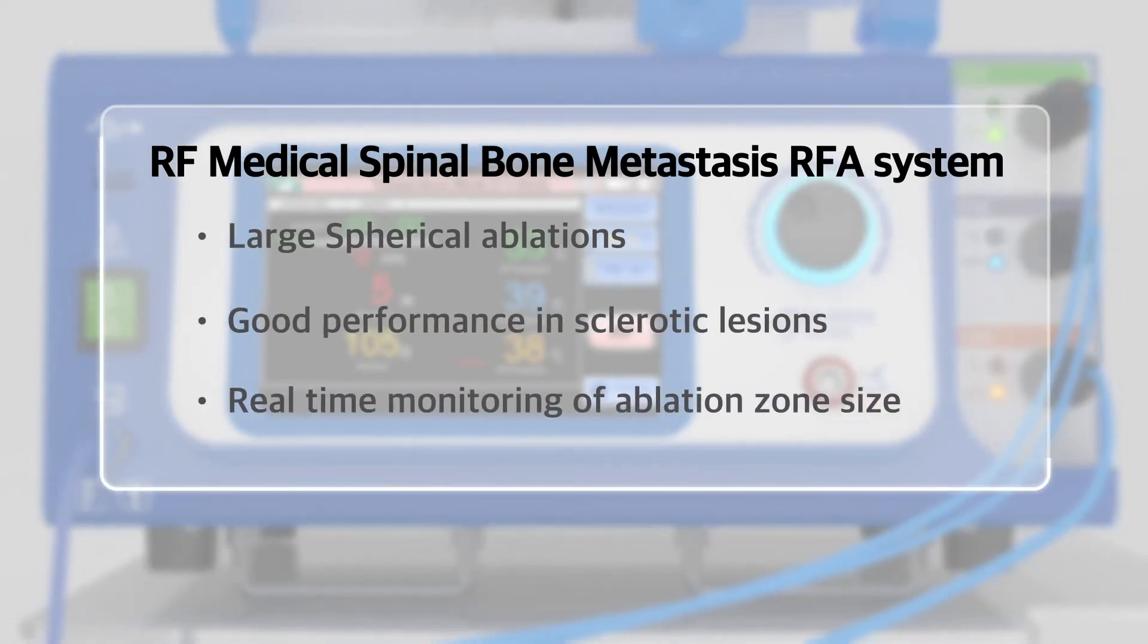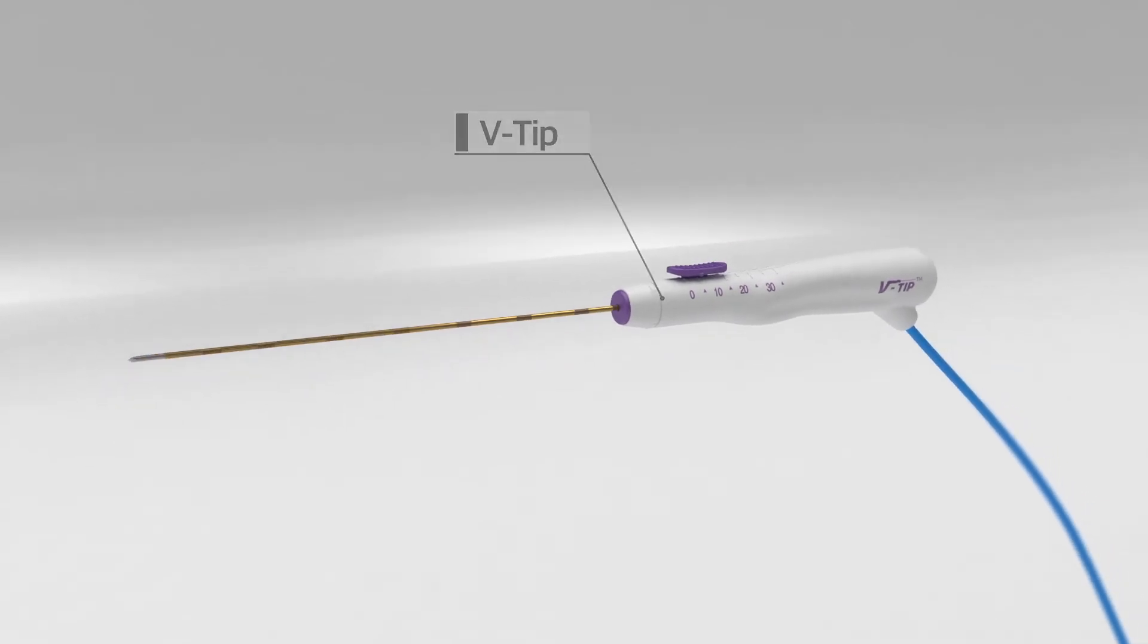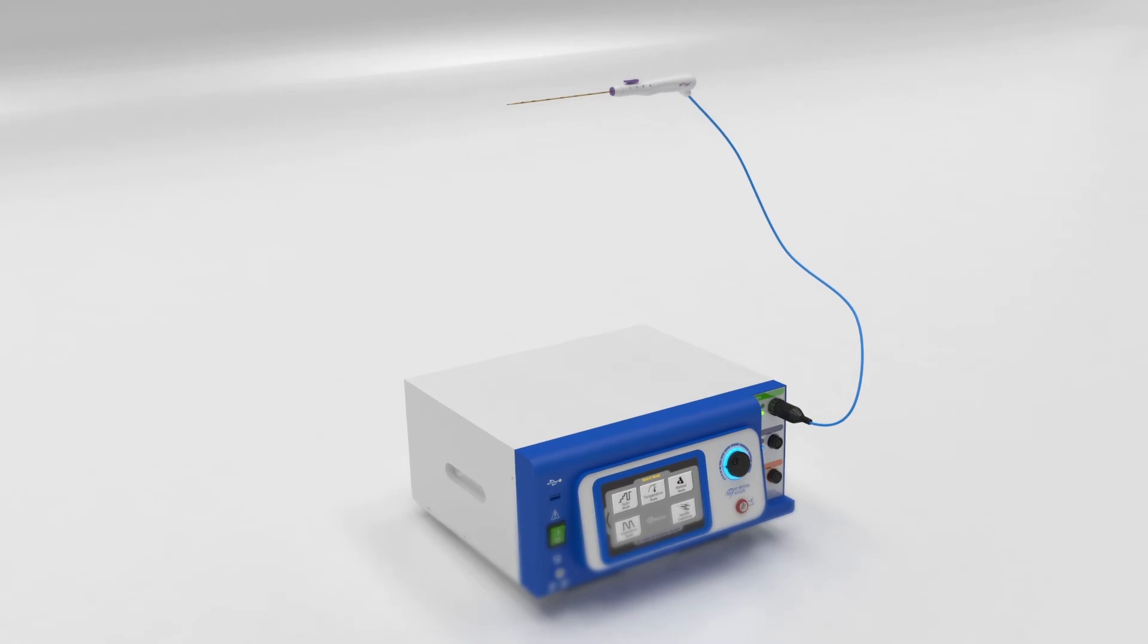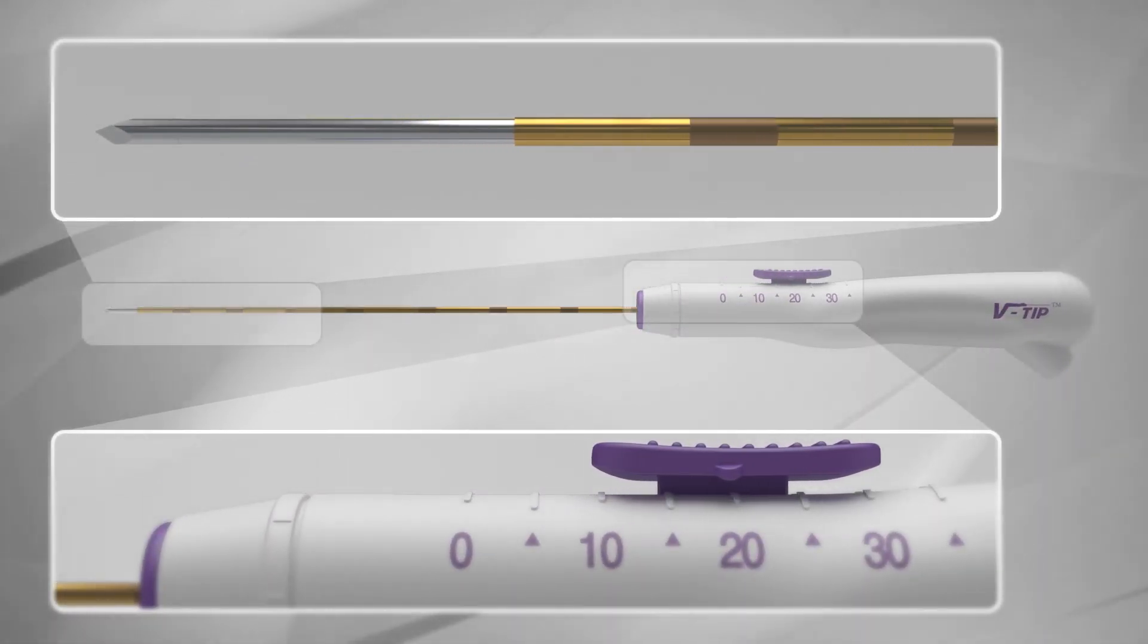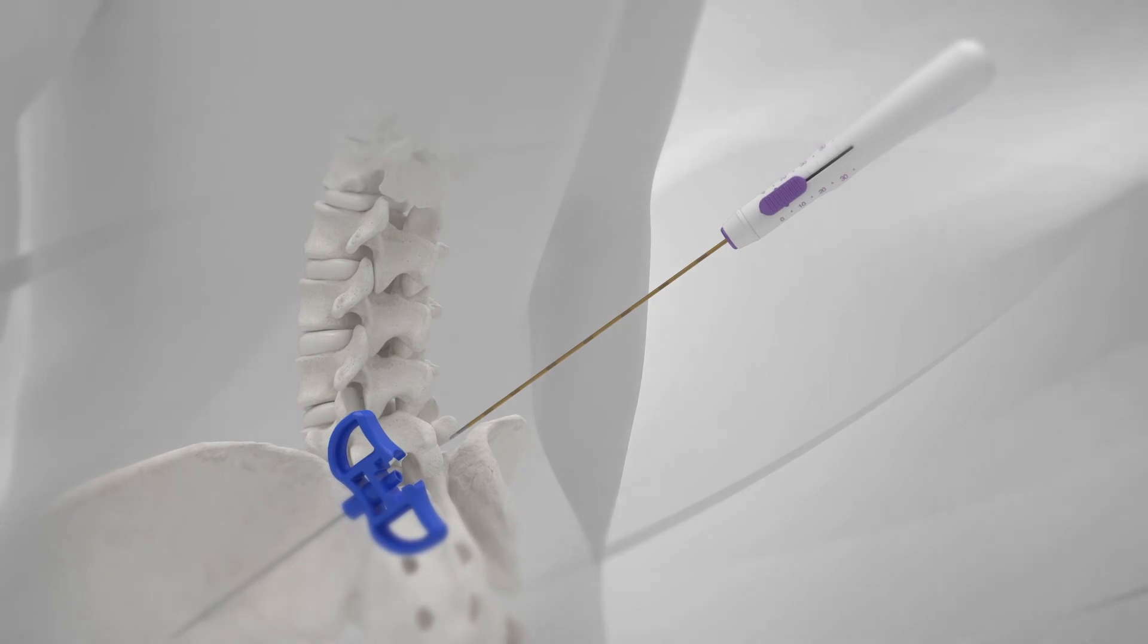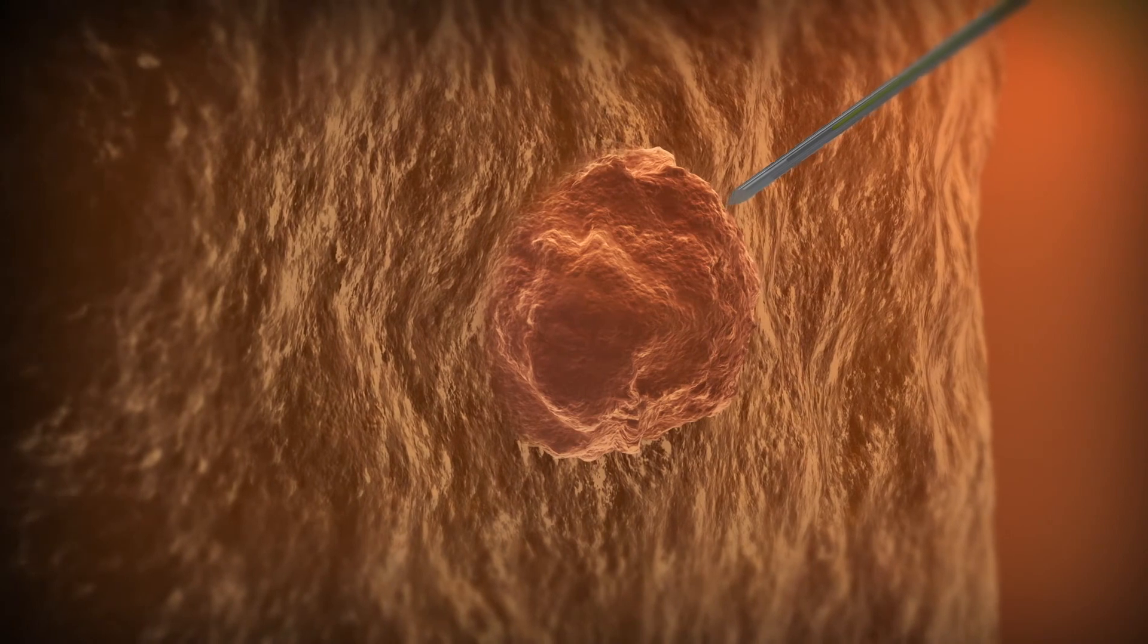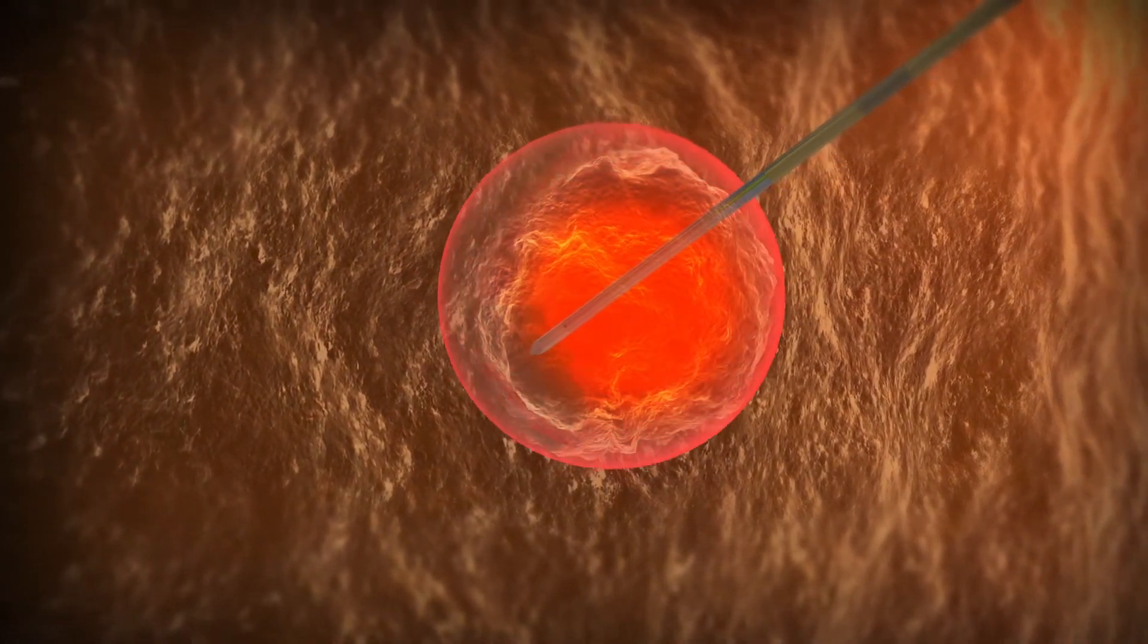Non-spinal bone metastases can be treated with our variable cool tip (VCT) electrode, an internally cooled electrode whose exposure tip can be adjusted from 0.5 to 4.0 centimeters, and with RF Medical's Jet Tip electrode, our internally cooled and perfused electrode that, thanks to saline perfusion, delivers larger amounts of energy to the tissue and obtains the largest ablations in the market by a single electrode.